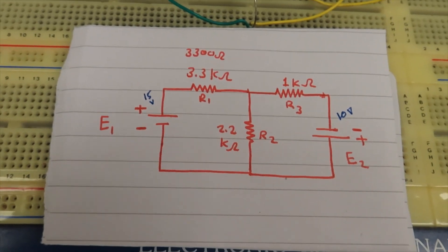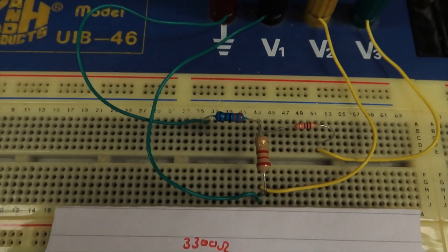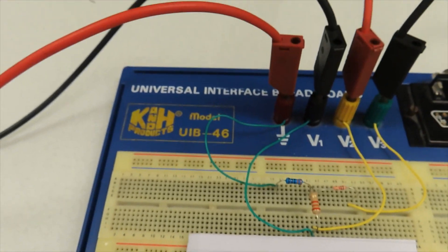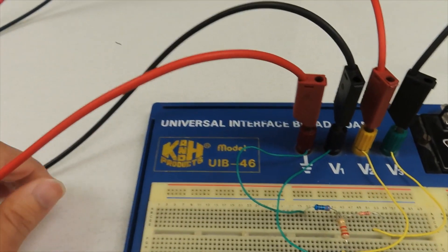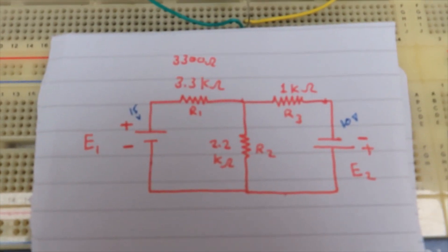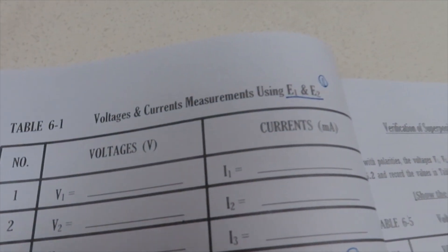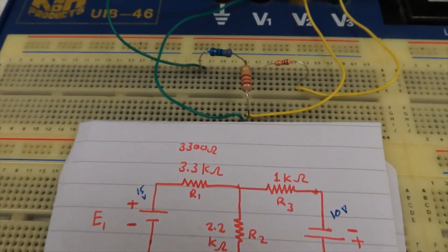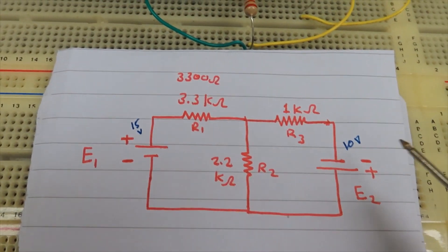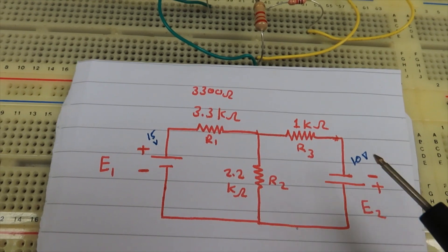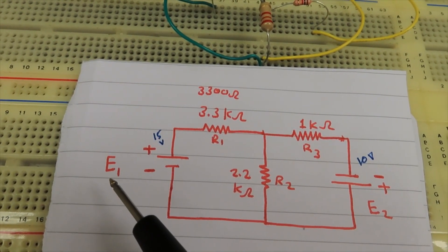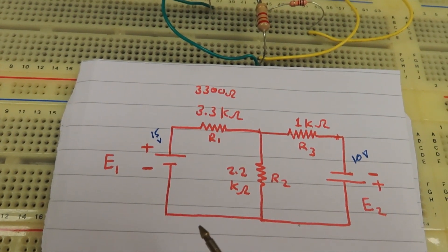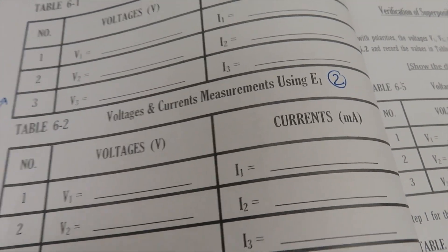So what we're going to do: first, we will implement the circuit as it is with two sources. This is the first source and this is the second source. Then we will measure the voltage and current and record it here using E1 and E2. Then we will short E2 and measure the circuit with the impact of E1 only, recording it using E1 only.